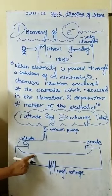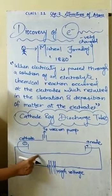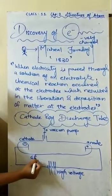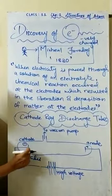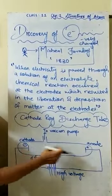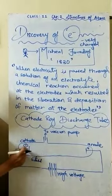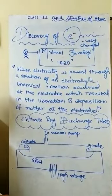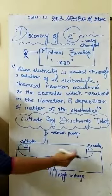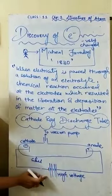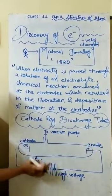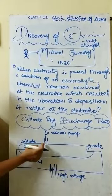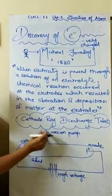The cathode ray discharge tube is nothing but a simple glass tube — you can see this portion is all made up of glass. In this tube, two electrodes are placed: one is the cathode, which is negatively charged, and one is the anode, which is positively charged. These electrodes are connected with each other with a high voltage.